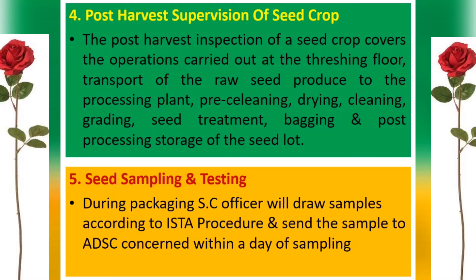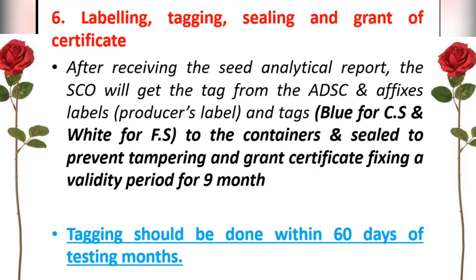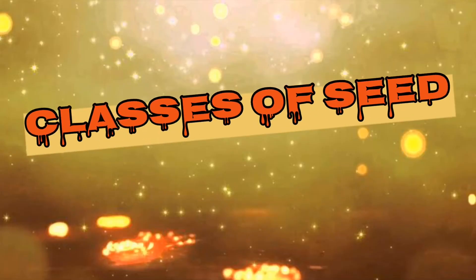Phase 5 is seed sampling and testing, where the seed inspector takes samples following prescribed procedures. Phase 6 is labeling, tagging, sealing, and grant of certificate. After all field and seed certification and testing, the officer obtains tags from the Assistant Director of Seed Certification. Certified seed gets a blue color tag and foundation seed gets a white color tag. Tag validity is nine months, and tagging must be done within 60 days of the testing month.